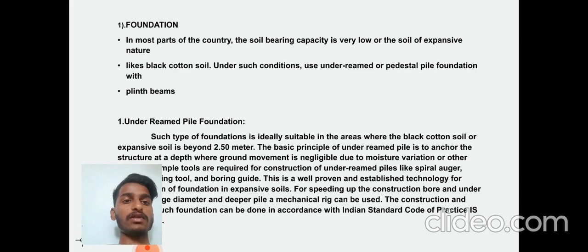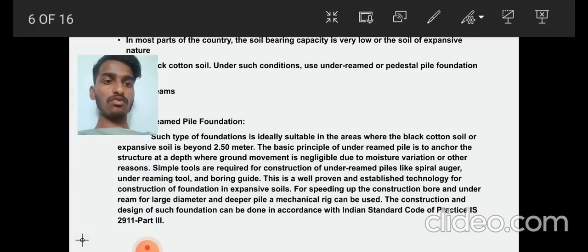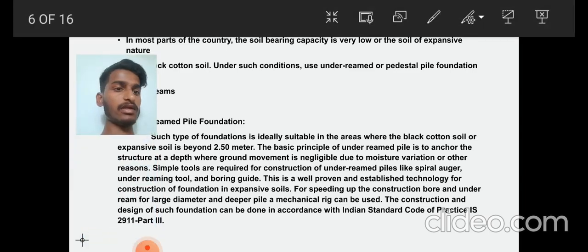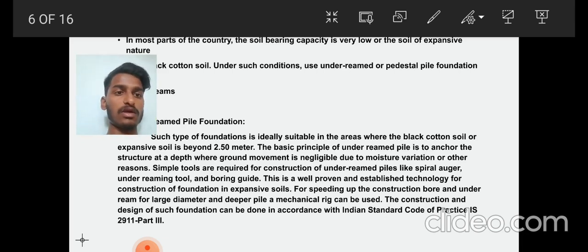The basic principle of under-reamed piles is to anchor the structure at a depth where the gross movement, due to moisture variation or other reasons, is negligible. Simple tools are required for construction of under-reamed piles, like a boring guide. This well-proven and established technology is suitable for cramped spaces and large diameter different piles.